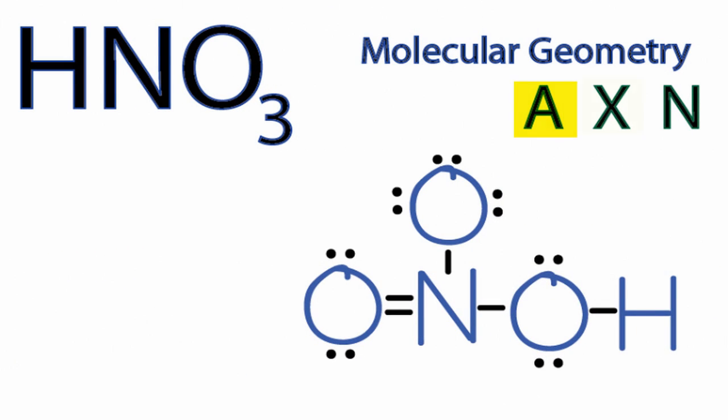A, that's the central nitrogen. X, that's the number of atoms bonded to the central nitrogen. There are three oxygens bonded to that central nitrogen. We'll put a three here.